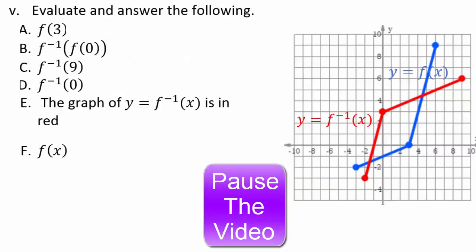Pause the video. You're given the graph of f of x — you already know how to graph f inverse: reverse the coordinates. The blue graph is f of x. For f inverse, interchange x and y: negative 3, negative 2 becomes negative 2, negative 3; 3, 0 becomes 0, 3; and 6, 9 becomes 9, 6. The red graph is your inverse function. Now find f of 3, f inverse of f of 0, f inverse of 9, and f inverse of 0; then find the formulas for f of x and f inverse of x.